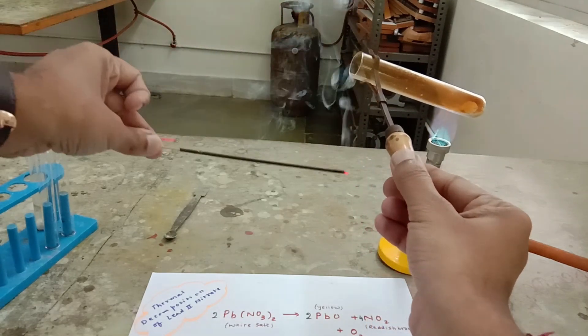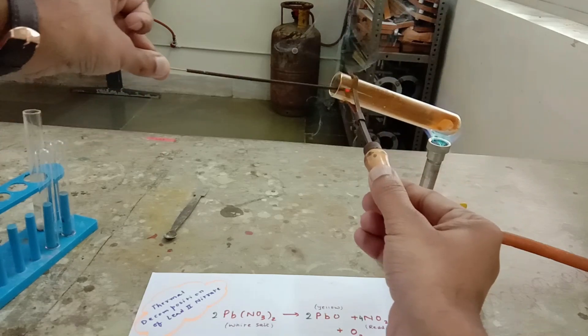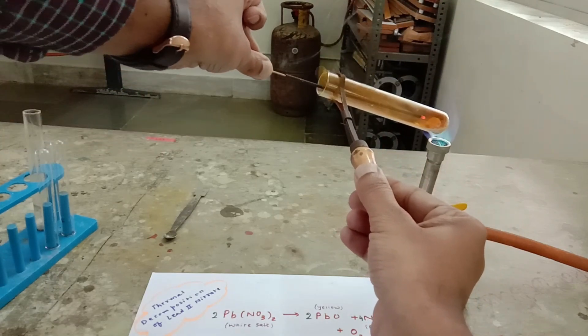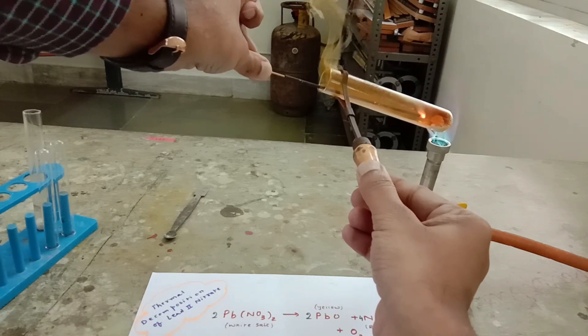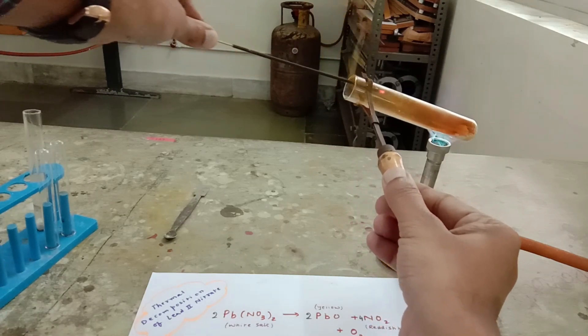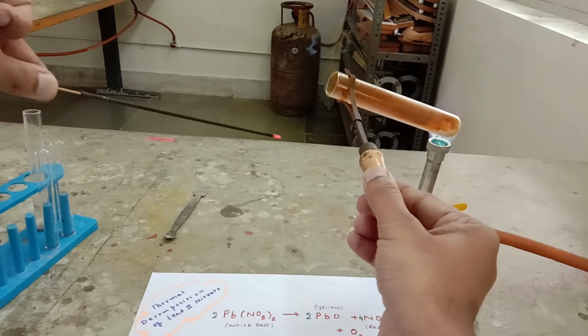So you can check the presence of oxygen gas with the help of burning splinter. The oxygen gas burns the splinter brighter and here we have the NO2 gas as well.